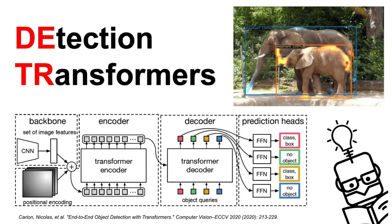Hi everyone and welcome back to the Object Detection Series. I am YML and in today's episode we are going to delve into the world of Transformers in computer vision and talk about the DETR model, which stands for Detection Transformer, a powerful end-to-end object detection model developed by the former Facebook AI team, which is nowadays known as Meta AI.